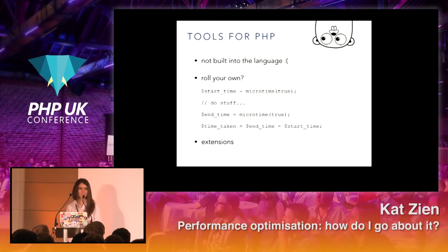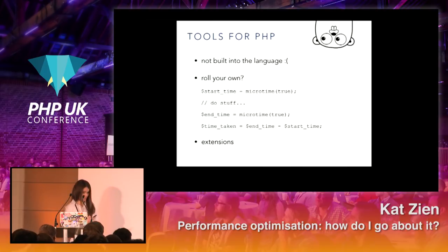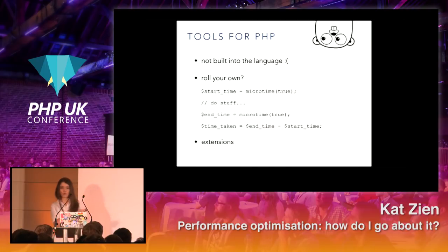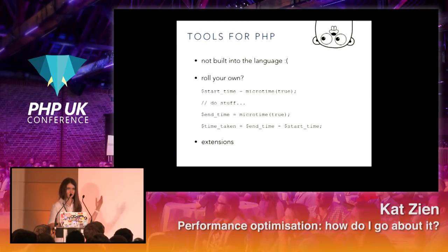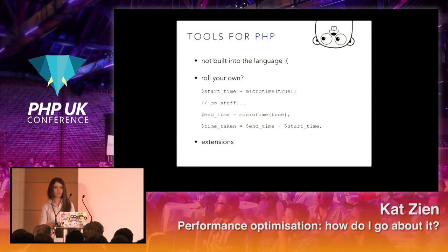How does that look for PHP? Well, for starters, none of this is built into the language. Compared to Go — Go has most of these tools just shipped with the language. With PHP, when you install PHP, you install PHP — you don't have any profilers available. You could roll your own; I'm not against just doing microtime at the beginning, microtime at the end, and then subtract them. That's how long my function took. For quick and dirty measurements, I think that's completely fine. But to do it across your entire app, you kind of need a more professional tool. Most of those tools are available as PHP extensions.